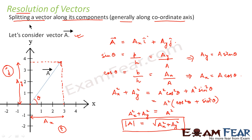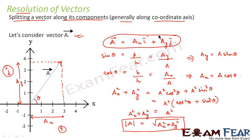This is how we write the magnitude of any vector in terms of its components along the x and y axes. In resolution of vectors we resolve or split a vector along its components, and the magnitude of the vector can be described in terms of those components.